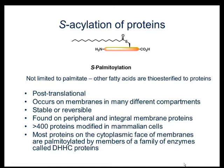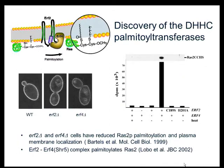Most proteins on the cytoplasmic face of membranes are palmitoylated by members of a family of enzymes called DHHC proteins, where DHHC stands for Asp-His-His-Cys — a four amino acid motif embedded in a cysteine-rich domain of the protein. The DHHC family of palmitoyltransferases were discovered in 2002, so we're in the first decade of the DHHC PAT family. Palmitoyltransferases are often called PATs, short for protein acyltransferases.